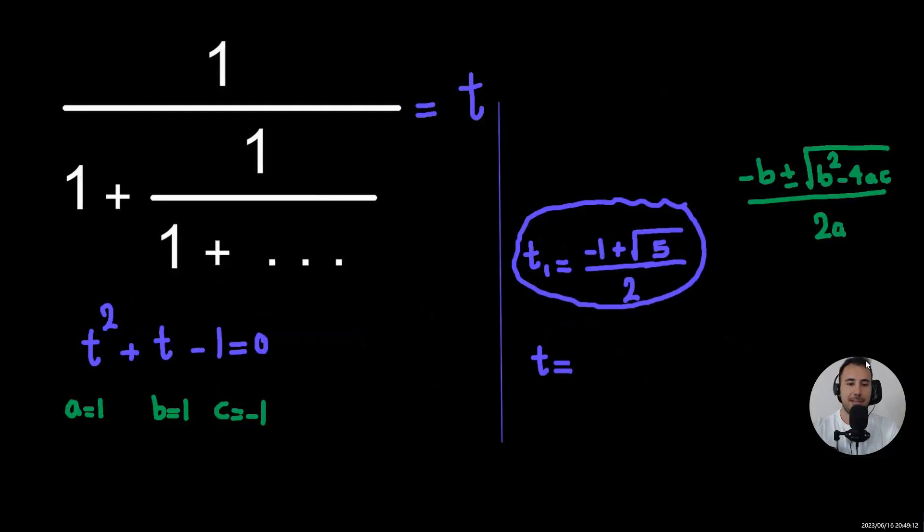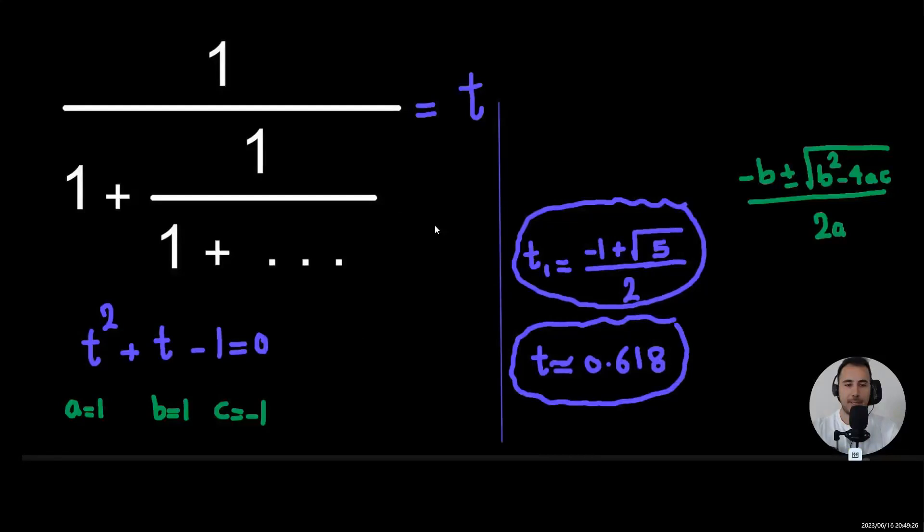But in case you wonder, what is really this? What is one over one plus one forever? It's almost 0.6, so it's less than 0.7. And now I want to tell you something.